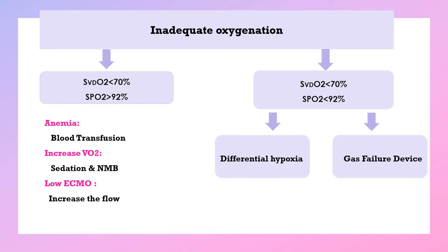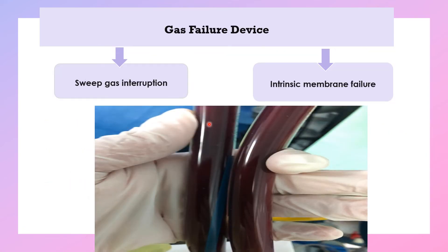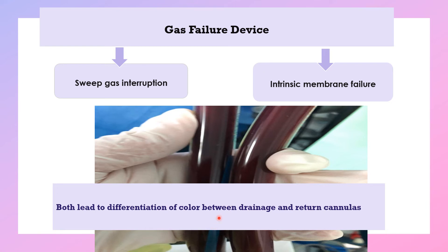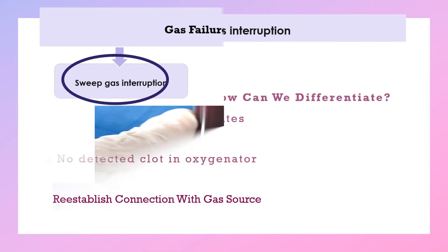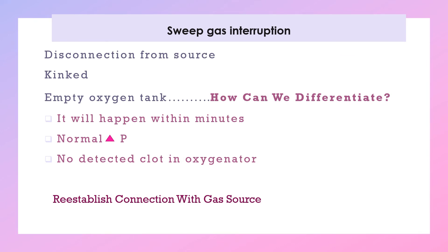Moving to another cause of inadequate oxygenation: gas failure device or oxygenator failure. This can be caused by sweep gas interruption or intrinsic membrane failure, both of which lead to loss of color differentiation between the drainage and return cannulas. Sweep gas interruption is a very important cause of hypoxemia or hypercapnia. Causes include disconnection from the source, kinking in the tubing, or an empty oxygen tank. It occurs within minutes, with normal delta P (B2 minus B1) and no clots detected in the oxygenator. The solution is to re-establish connection with the gas source.